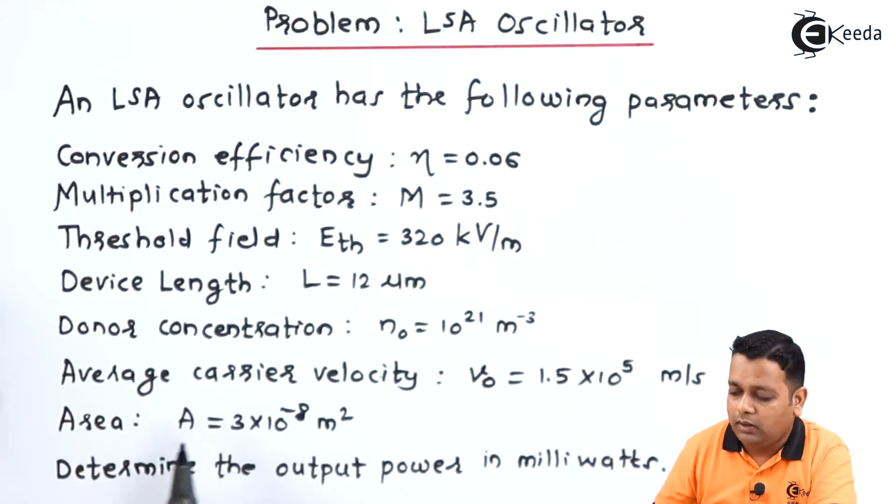Lastly, the area is represented as capital A and it has the value 3 into 10 raised to power minus 8 meter square. We are asked to determine the value of the output power in terms of milliwatts.